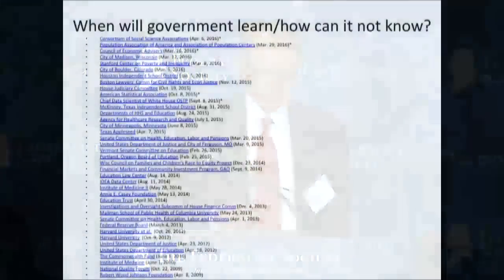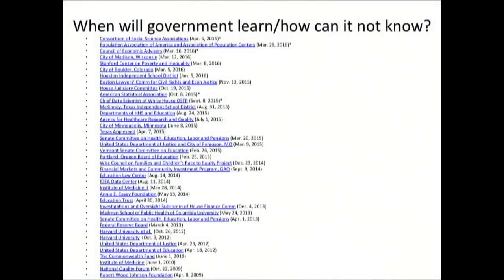When will the government learn and how can it not know this? It doesn't know this because neither does the scientific community. These are letters to various entities explaining to them how practically nothing they do in the analysis of group differences is sound, because they fail to understand the way their measure tends to be affected by the frequency of an outcome. Consequently, very little in the analysis of demographic differences provides useful information.